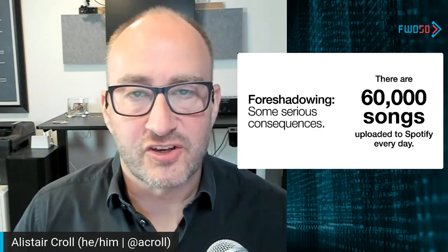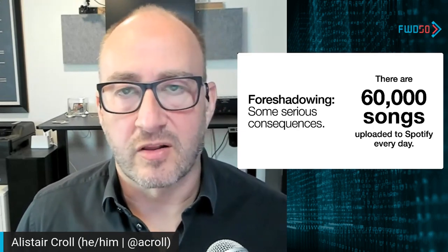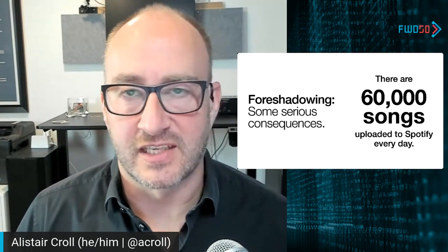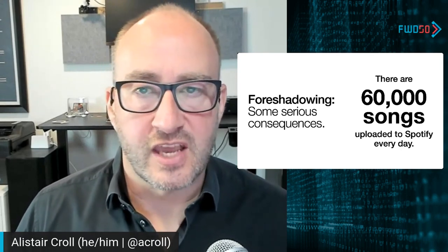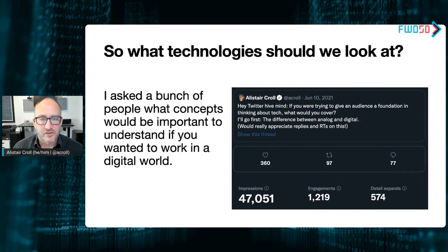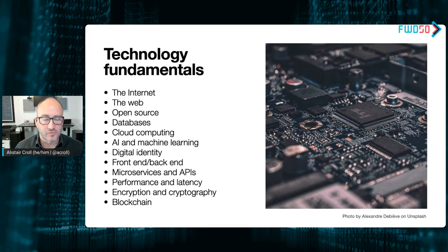I wanted to give you this initial framework because it's what makes me think about technology differently — it's not just 'here's how AI works' or 'here's how cloud computing works,' but understanding the underlying nature of atoms and bits and what that means for scarcity, privacy, and copies. That allows us to think using first principles about technologies. People asked about the internet, the web, open source, databases, cloud computing, AI, digital identity, front end and back end, banking services and APIs, performance, latency, encryption, blockchain — I'll explain these in non-technical ways.